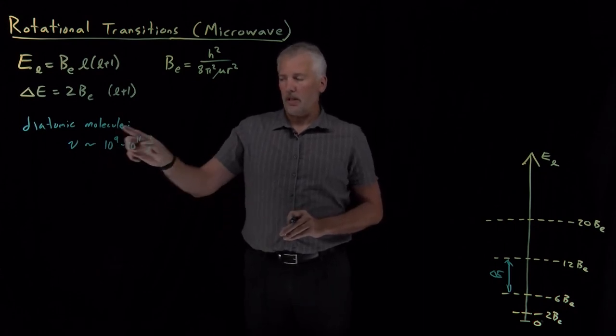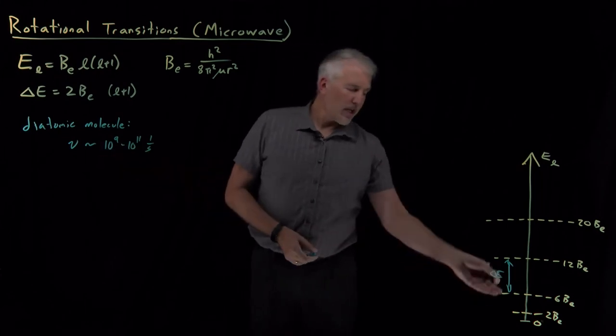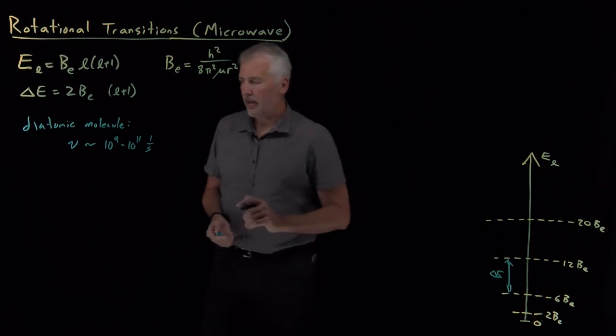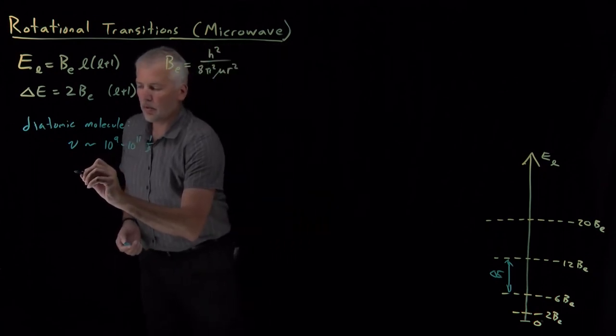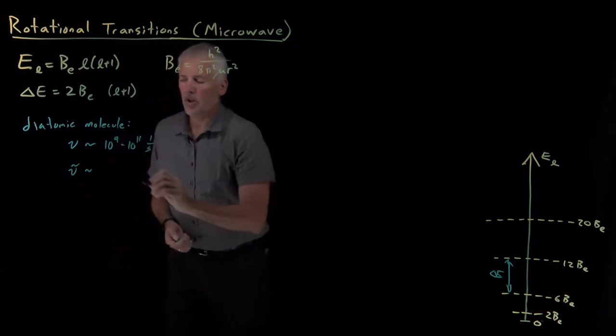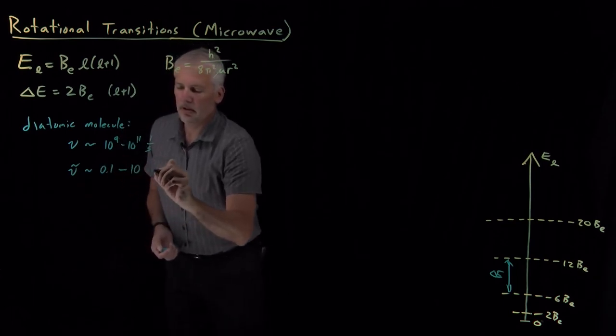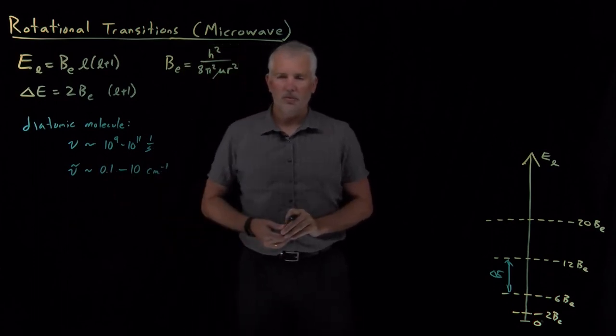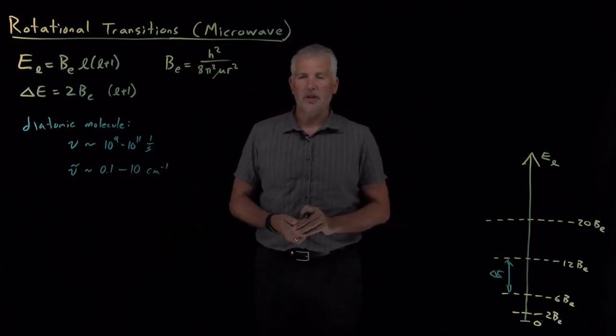Again, depending on what molecule we're talking about and which gap we're talking about, those can span a pretty large range. The wave numbers of those photons are typically in the range of a tenth to 10 or a few tens of inverse centimeters.